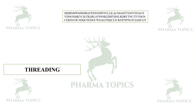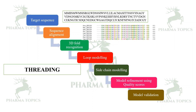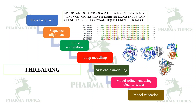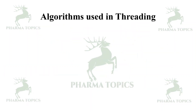In threading, you have a target sequence. You do sequence alignment, then 3D fold recognition, then loop modeling, then side chain modeling, then model refinement using quality scores, and finally you can validate the model. Sequence alignment is similar to homology modeling. You can validate the structure with a Ramachandran plot and other methods.